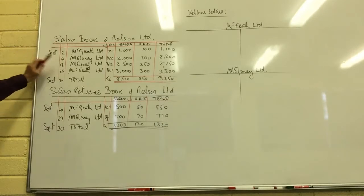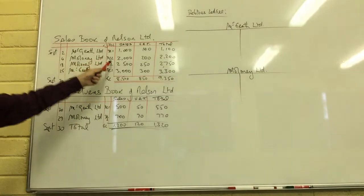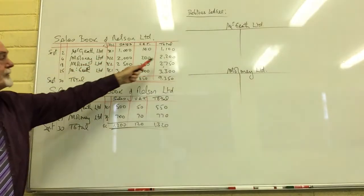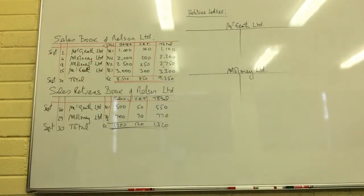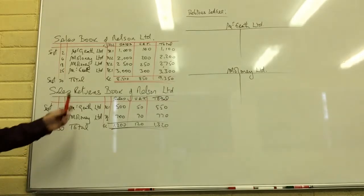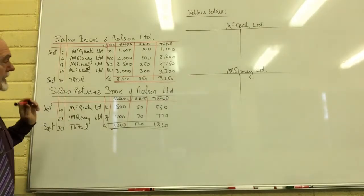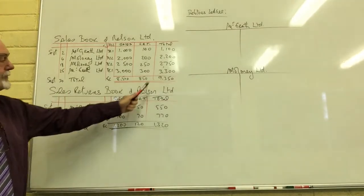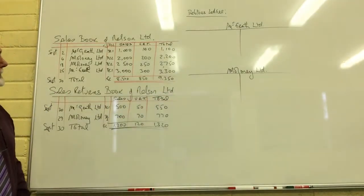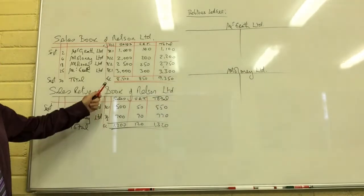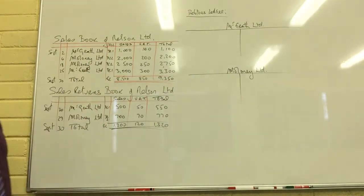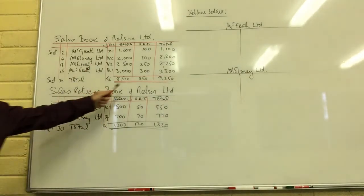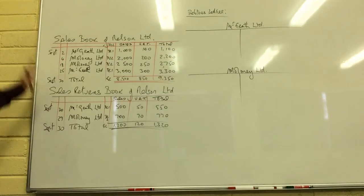On the 4th and the 18th we sold goods on credit to Maloney Limited for those amounts plus 10% VAT. In all, for the month of September we've sold goods on credit to the value of £9,350, made up of goods themselves worth £8,500 plus 10% VAT on that amount. So that's our sales day book.